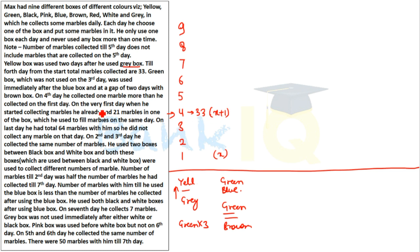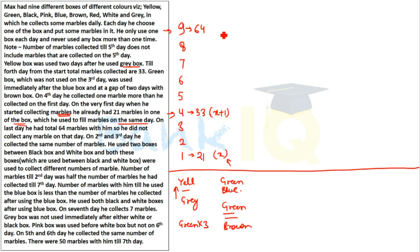Condition 6: On the very first day when he started collecting marbles, he already had 21 marbles in the box which he used to fill on the same day. Condition 7: On the last day, he had a total of 64 marbles with him, so he did not collect any marble on that day.